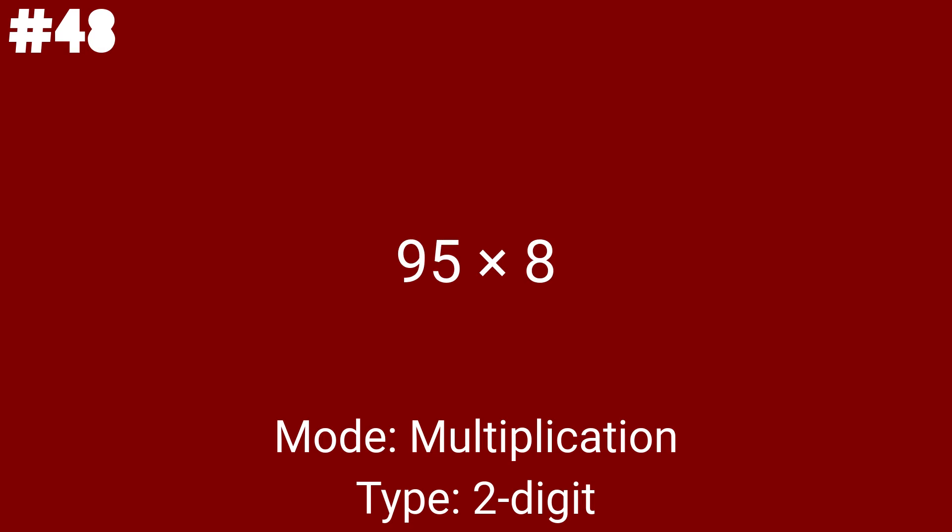The eighth multiplication problem is 95 times 8. Because the second number is 8 and the first number is 2 digits, this one belongs to third grade — it's a 2 by 1. Problem number 9 is 83 times 1. You know the drill: just multiply by 1. You already know the answer to this.